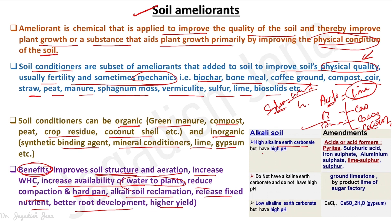For alkali soil with alkaline earth carbonate and high pH, acid or acid-forming materials are used: pyrite, sulfuric acid, iron sulfate, aluminum sulfate, lime sulfur, and elemental sulfur. If the alkali soil does not have alkaline earth carbonate and does not have high pH, then limestone can be used. If it has low alkaline earth metal and high pH, then calcium chloride or gypsum can be used. These are the amendments used to improve physical property and overall soil health and quality.